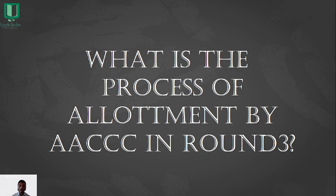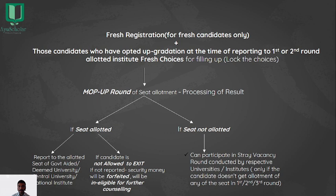Process of allotment by AAATCC in Round 3: For registration, fresh candidates can apply for Round 3 itself, along with candidates who opted for upgrade at the time of reporting to the first or second round allotted institute, along with fresh choice filling and locking of choices. The mop-up round result will then be issued. Again, there are two possibilities: a seat getting allotted, or a seat not getting allotted. First, for a candidate who gets a seat allotted, they need to go to the allotted institute and report.